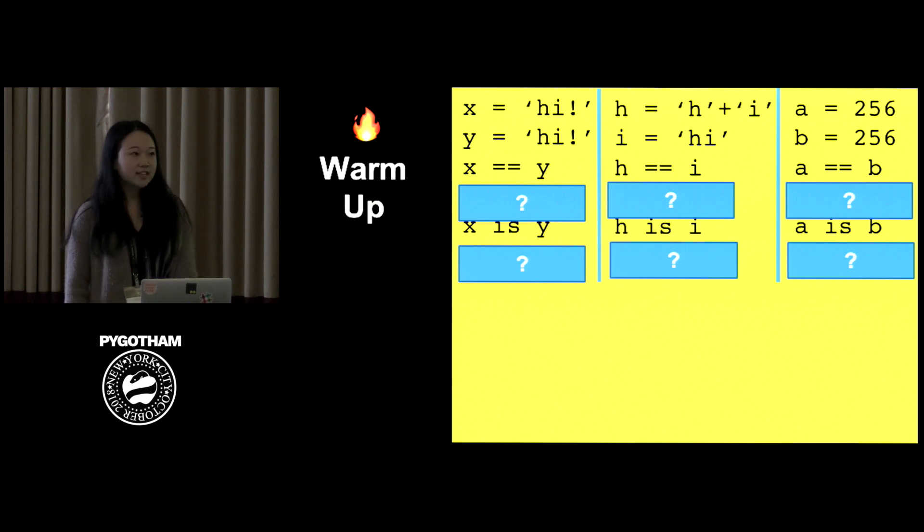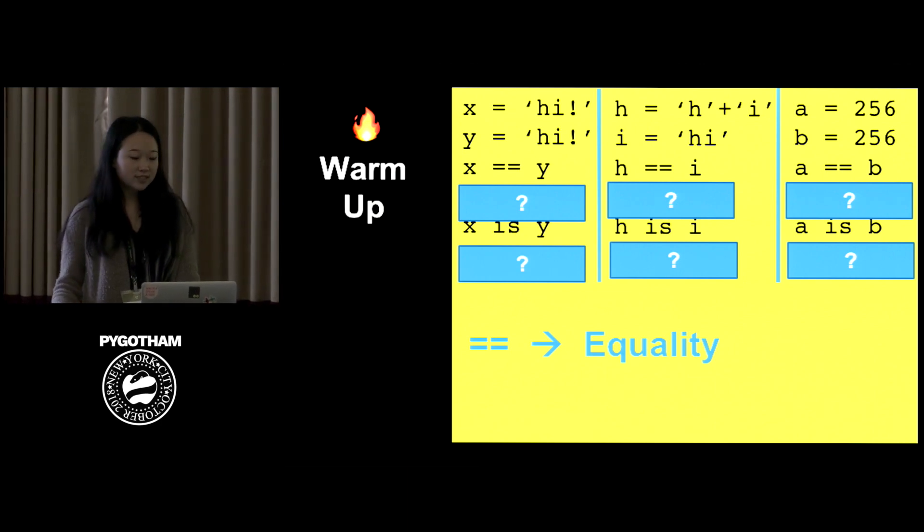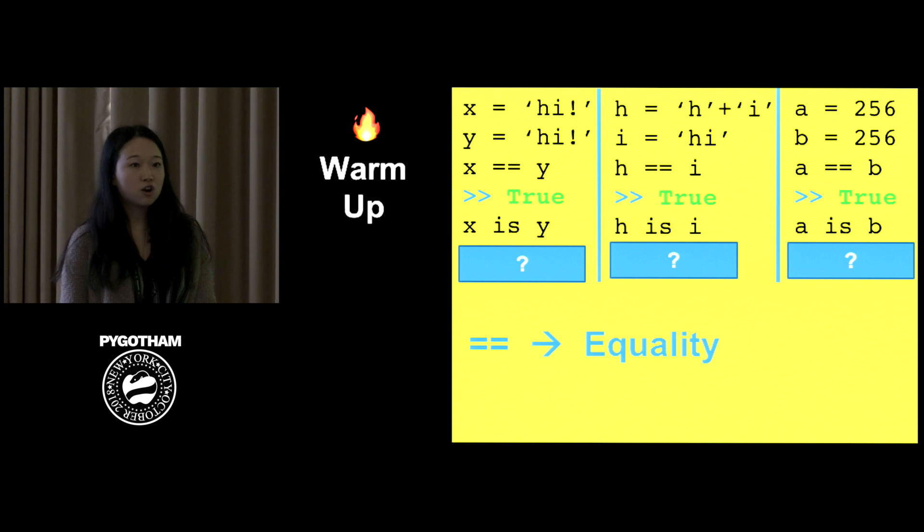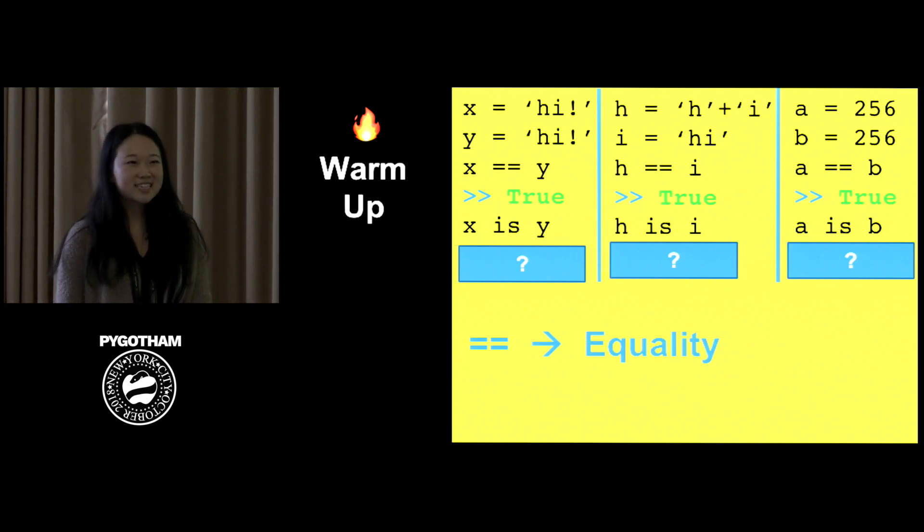So you may notice that the first three statements you see all use a double equal sign, and if you're familiar with Python, you'll know that that checks for equality. Are the values the same? And so it may come to you as no surprise that all of these are true. So what does the is statement check for? The is statement checks for something we call identity. So basically, are we referring to the same exact object that lives in the same memory location?